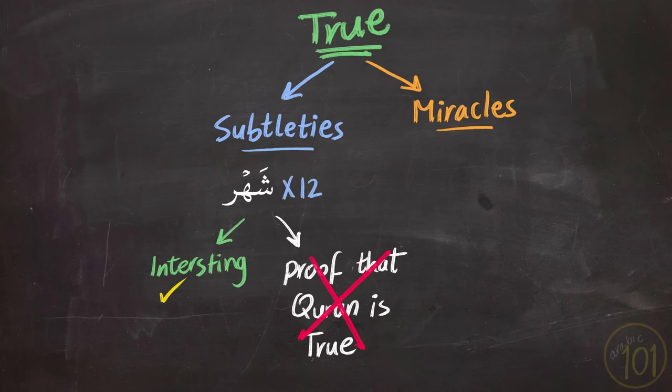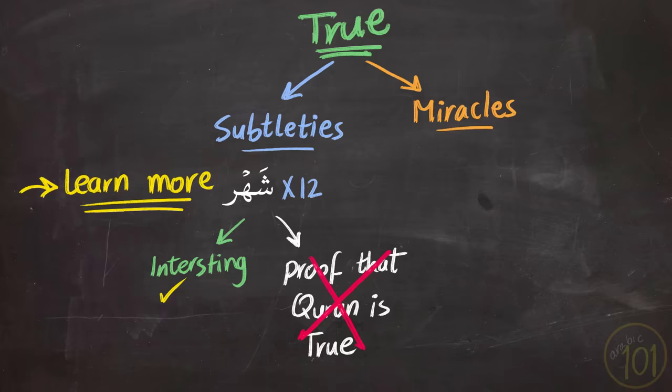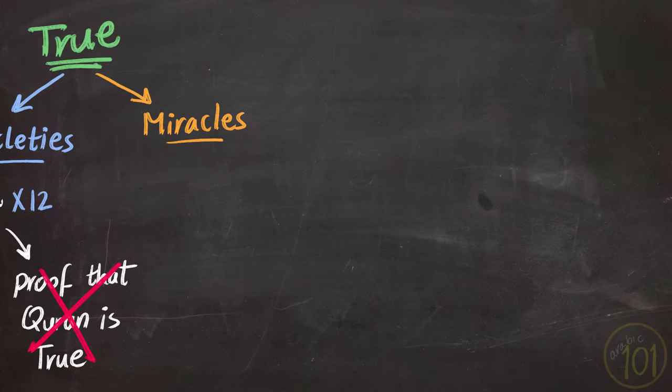And at the same time, we should never undermine or belittle this type of information if they are indeed true. We should always try and learn more about the book of Allah, since there is wisdom behind every letter found in it. A miracle, on the other hand, is something that a human being can never produce or know,